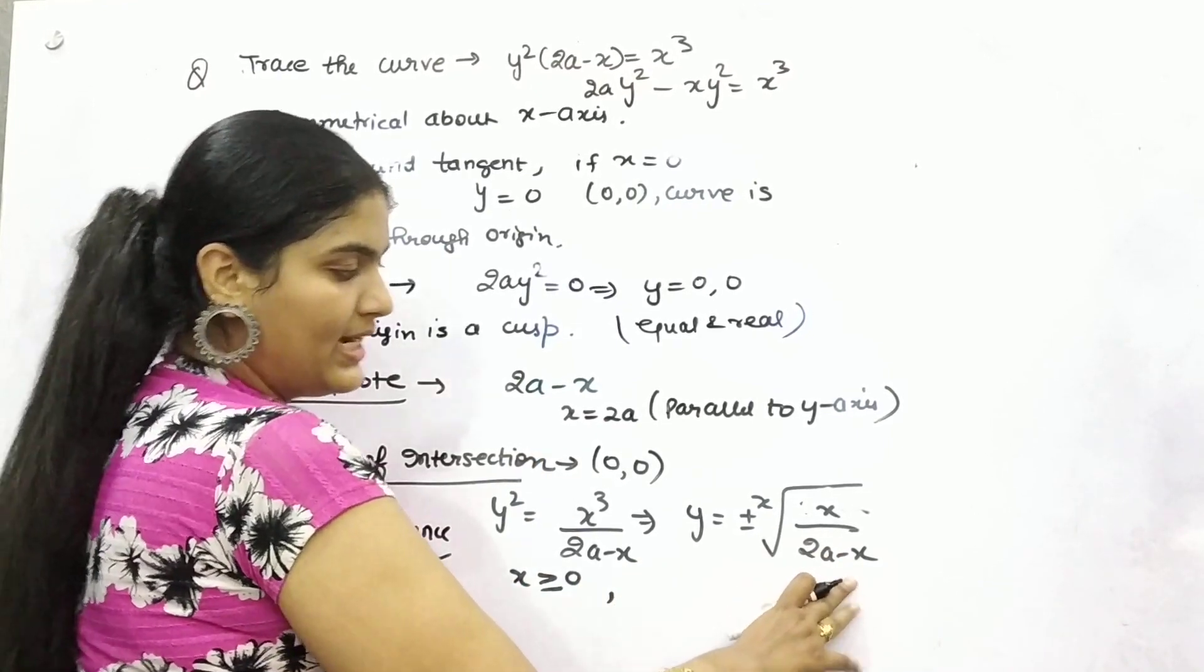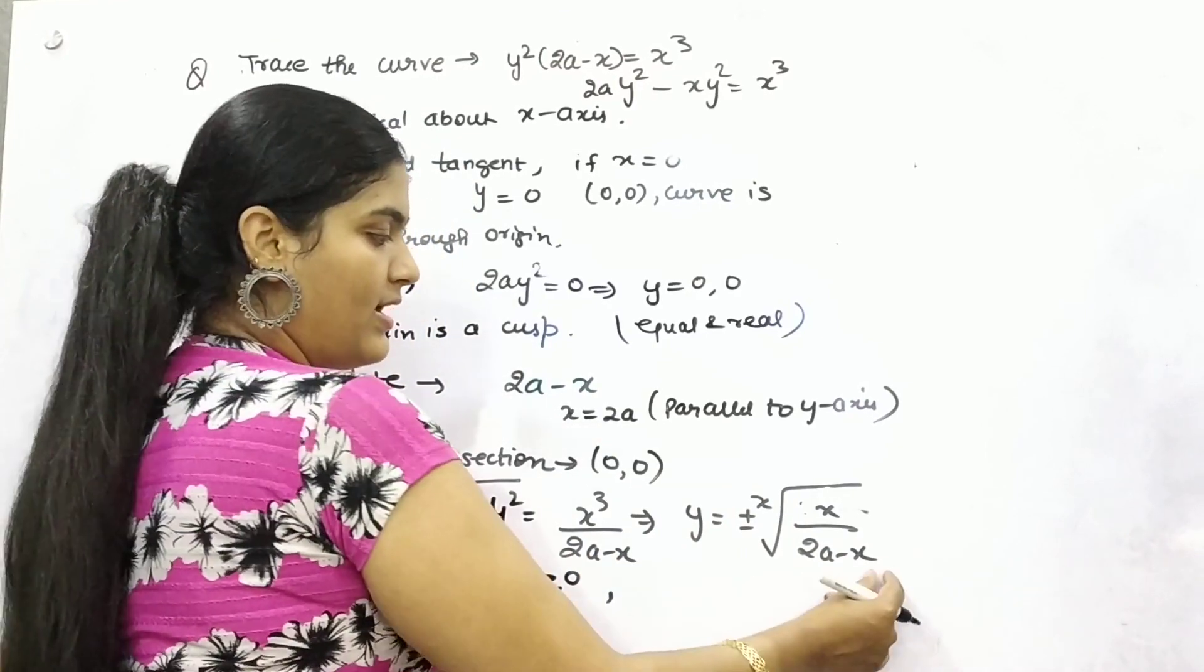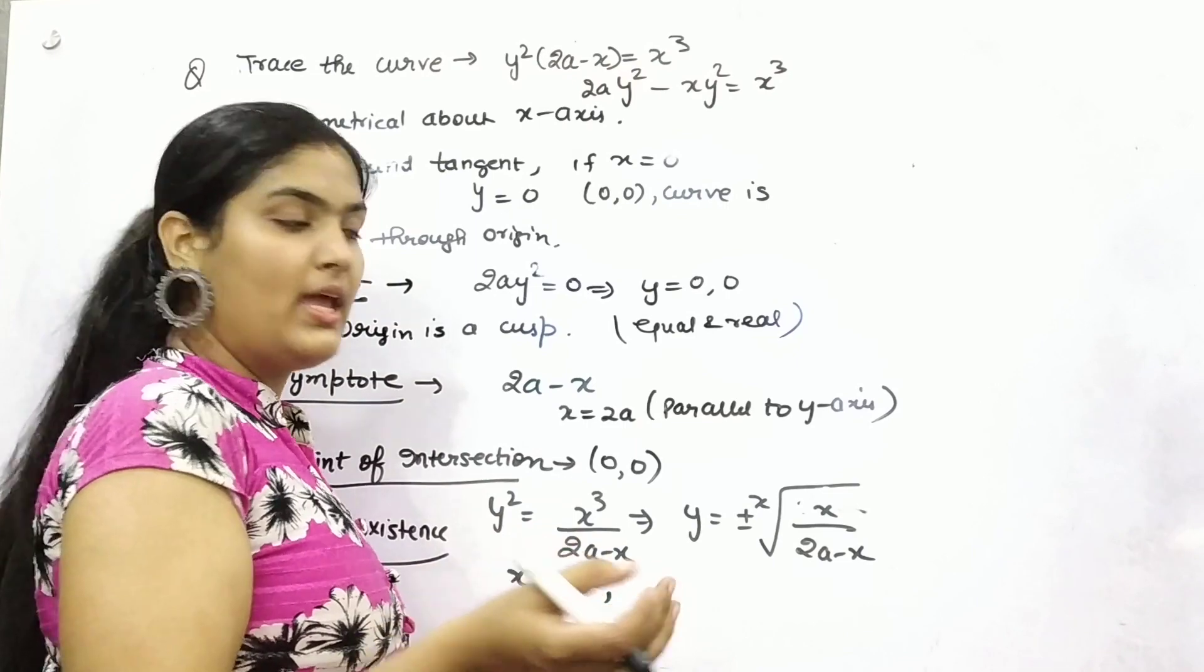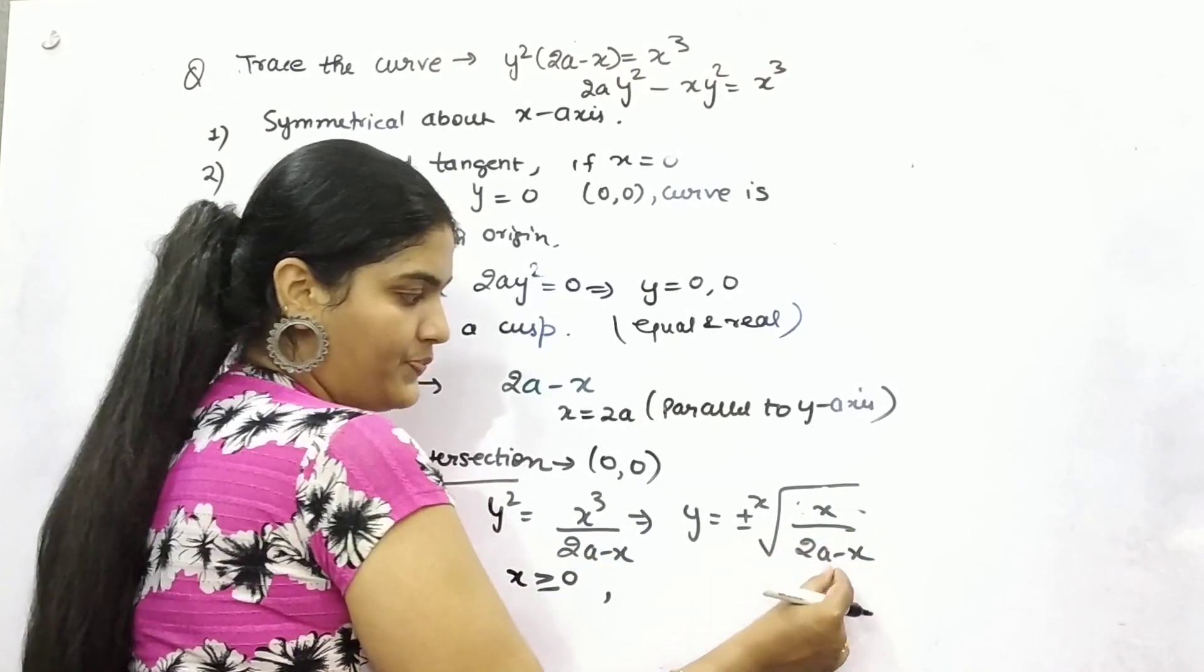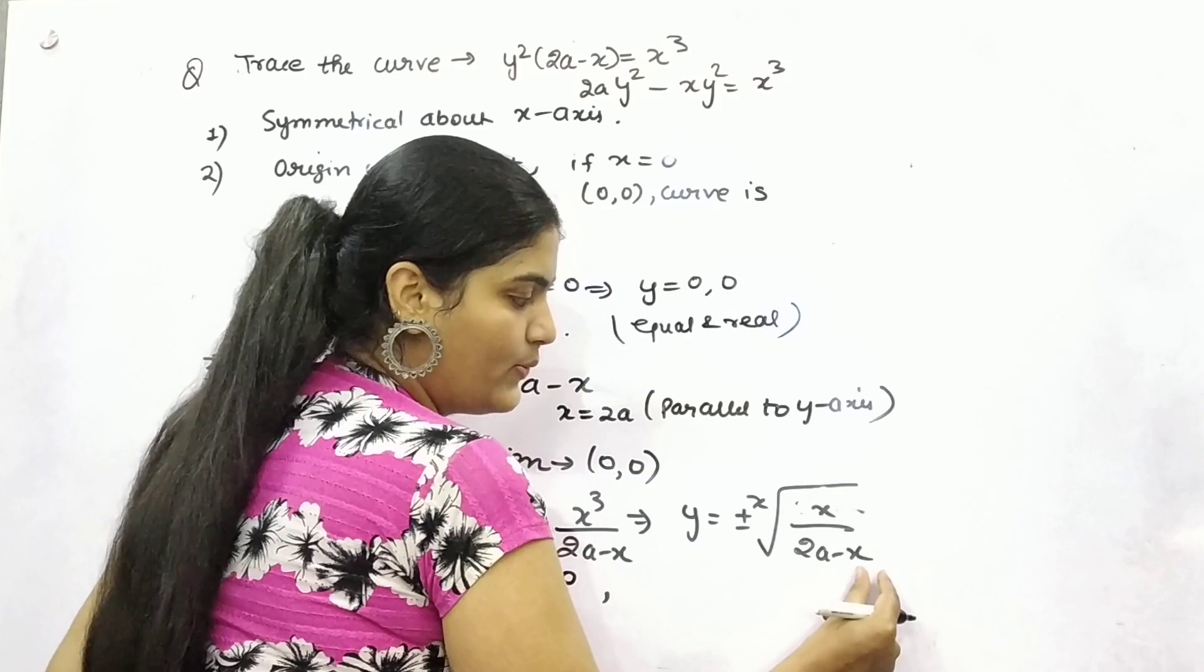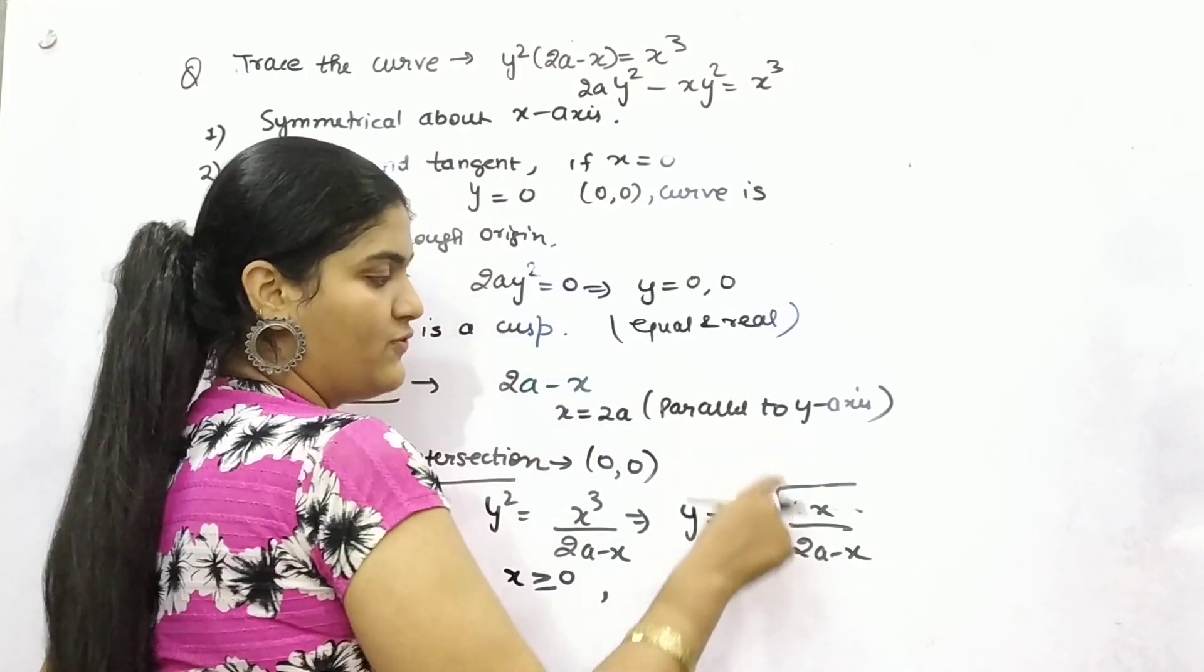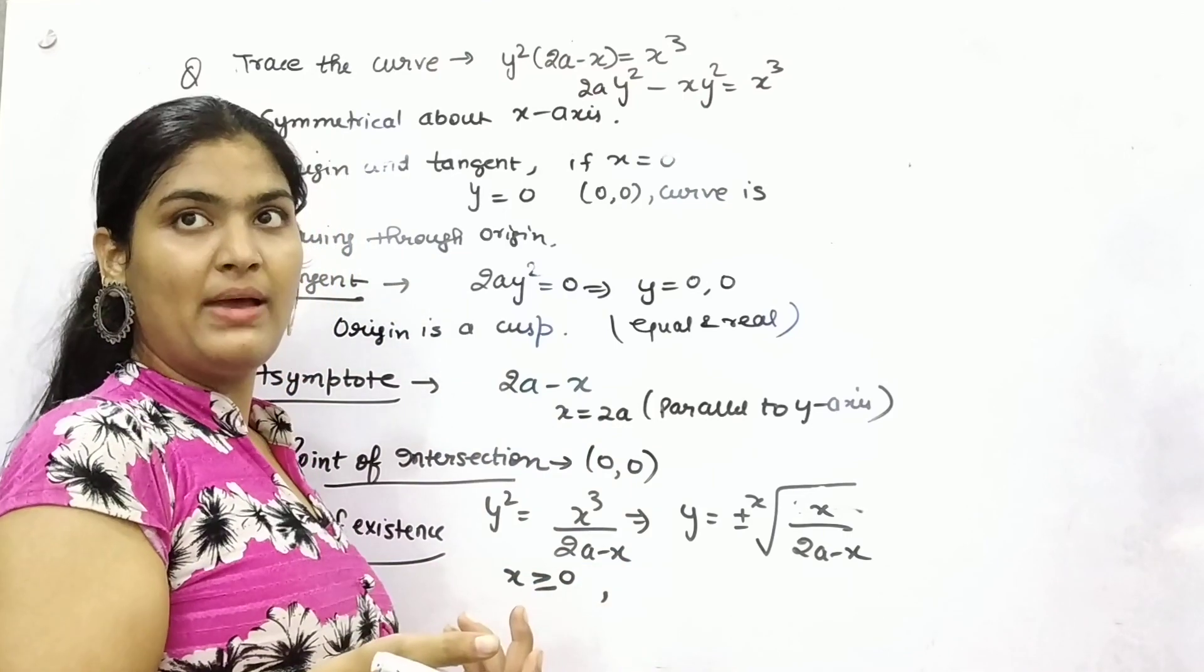Thereafter, you can see in denominator, if x will be less than 2a, if x would be less than 2a, then, or more than 2a, let's say, if it would be more than 2a, let's say 3a, 2a - 3a = -a,